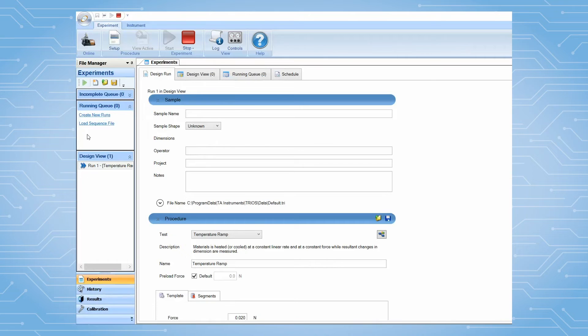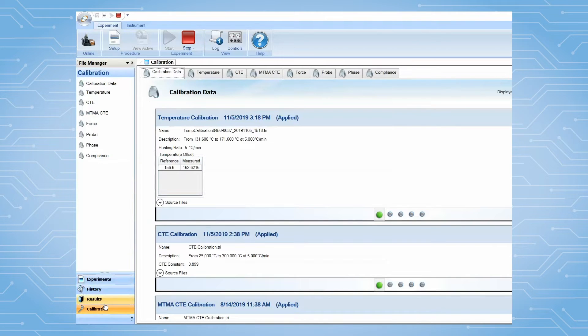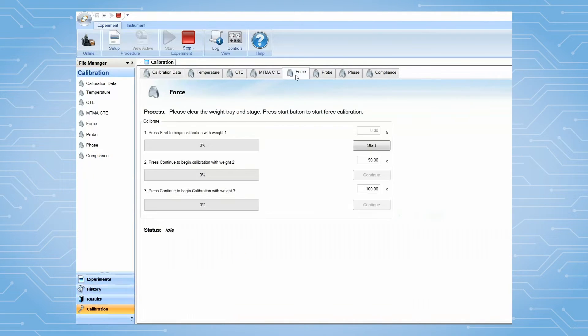You can also calibrate force from the TRIO software by going to the file manager calibration panel and selecting the force tab.